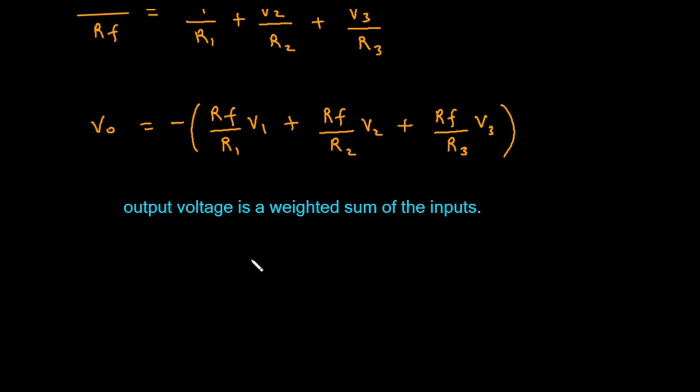The equation becomes much simpler. Vo equals the negative of (V1 plus V2 plus V3). In this special case, the circuit becomes a perfect inverting adder. It adds the input voltages together and then flips the sign of the result.